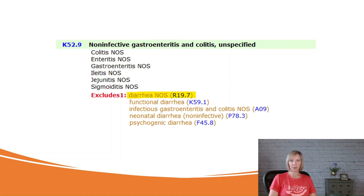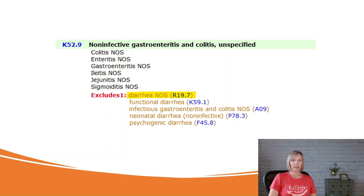Now let's consider a situation where there's a conflicting guideline that prevents us from assigning the code mentioned in the EXCLUDES-1 note. In the case of code K529 for noninfective gastroenteritis and colitis, diarrhea NOS is excluded. Although the EXCLUDES-1 note refers us to use code R197 for diarrhea, colitis is a condition that includes diarrhea as a symptom. And according to the guidelines, we must always assign a definitive diagnosis code rather than a symptom code.